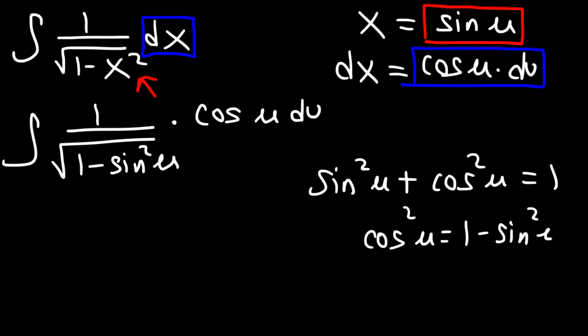And so we can replace this with cosine squared. So we're going to have the integral of 1 over the square root of cosine squared times cosine u du. And the square root of cosine squared is just cosine.